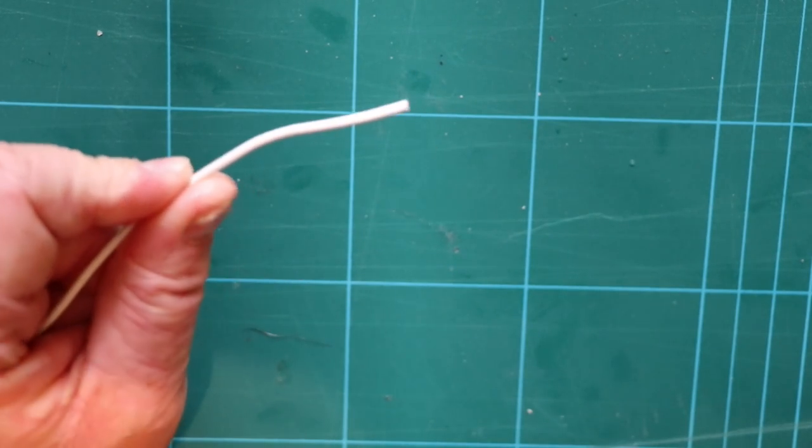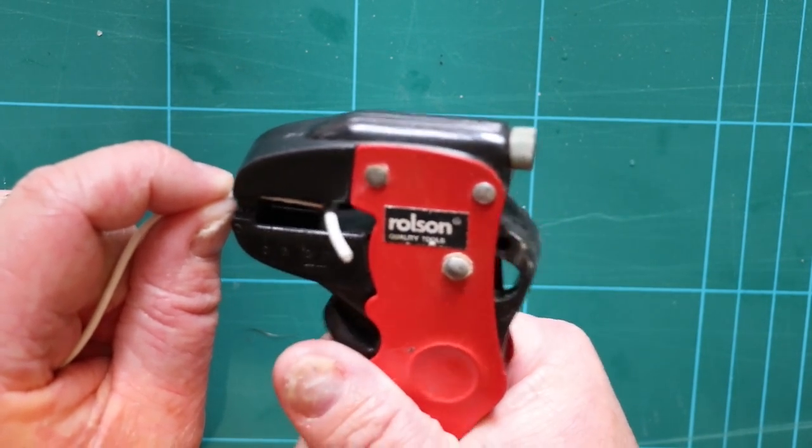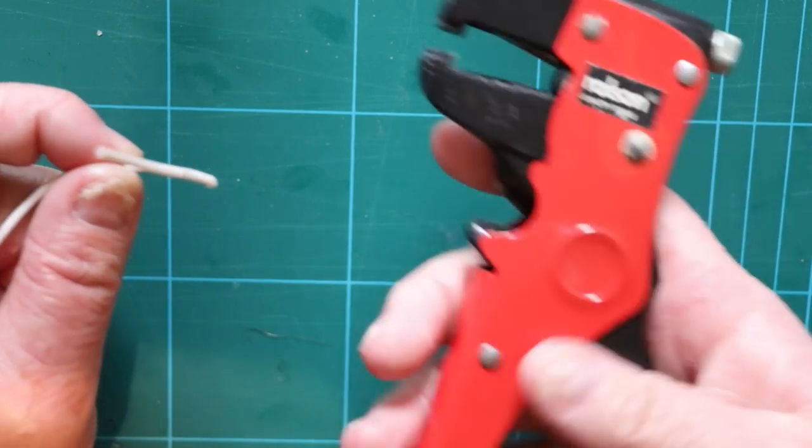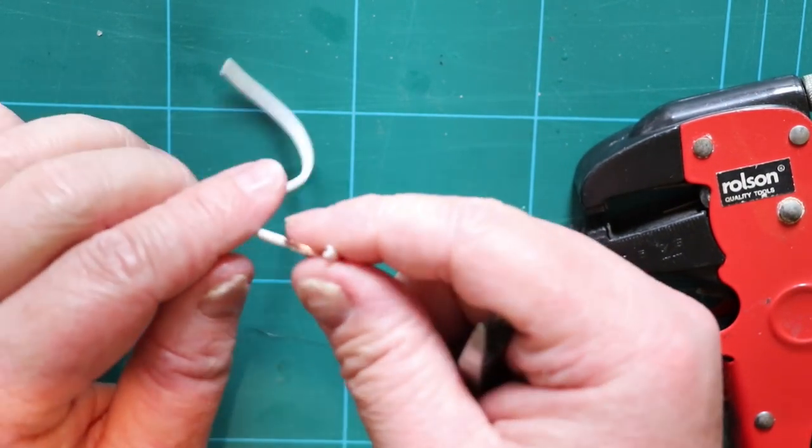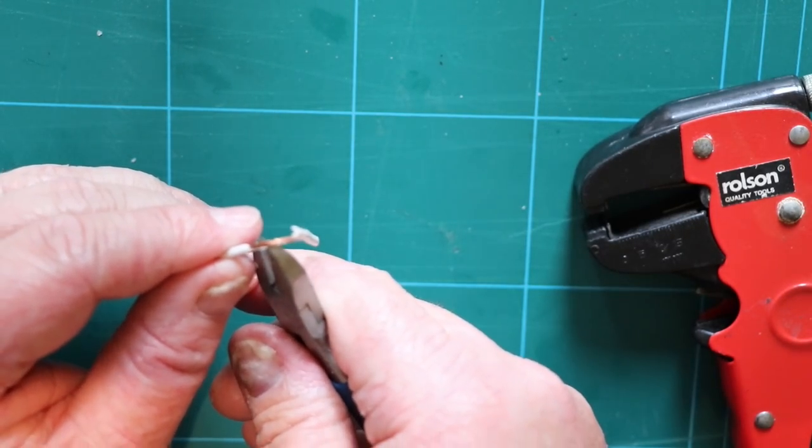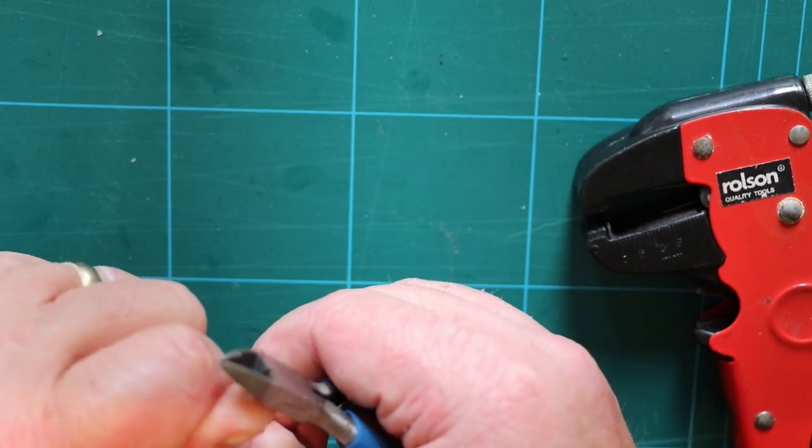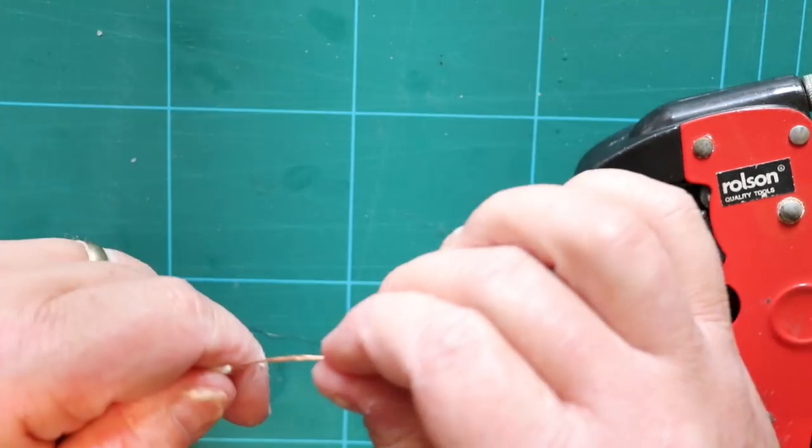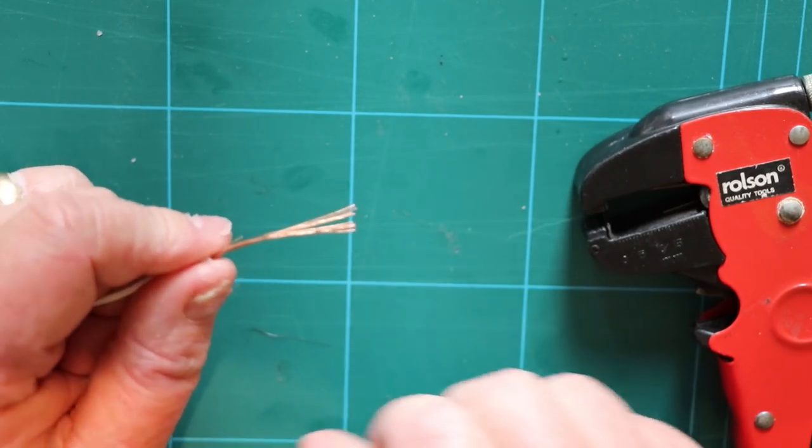And this is how we're going to do it. So the first job we need to do is prepare our ends. So let's start off by removing some of the outer sheath. Now I'm using a pair of wire strippers here which are frankly a bit rubbish and a bit broken. So we're just going to pull away the outer sheath, and that exposes all the strands in the cable like so.